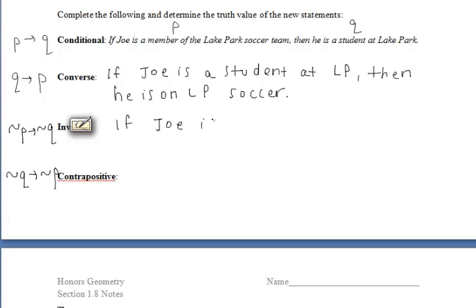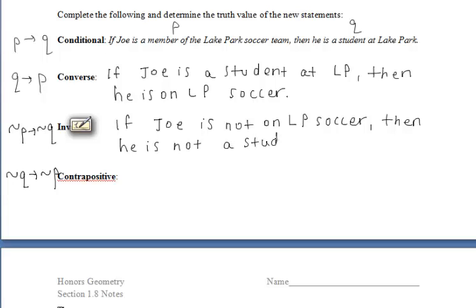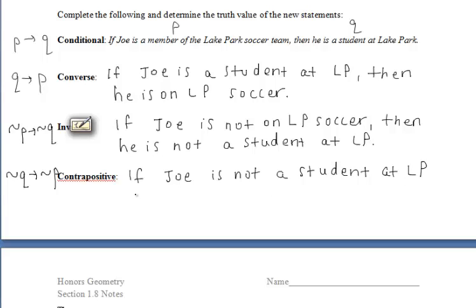For the inverse, we negate the conditional — we keep it in the same order but add 'nots' in front. So we'd say: 'If Joe is not on the Lake Park soccer team, then he is not a student at Lake Park.' For the contrapositive, we flip it and negate it: 'If Joe is not a student at Lake Park, then he is not on the Lake Park soccer team.'